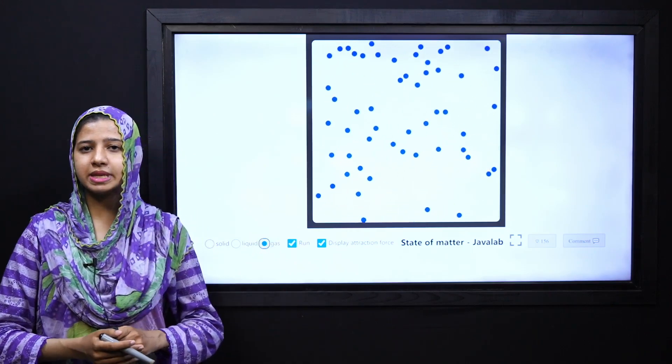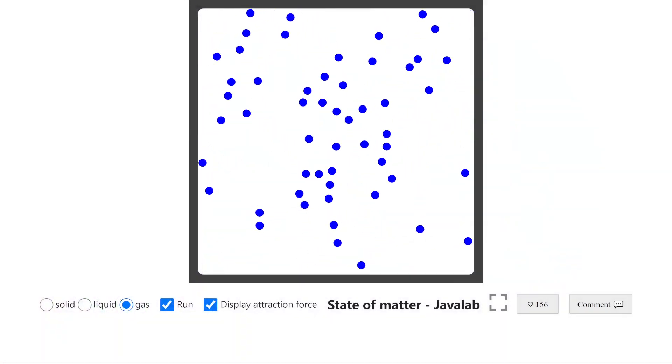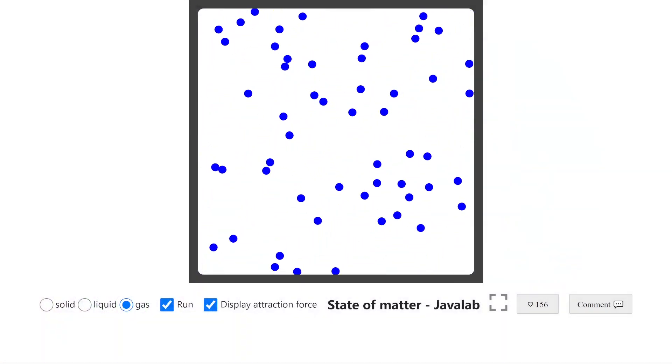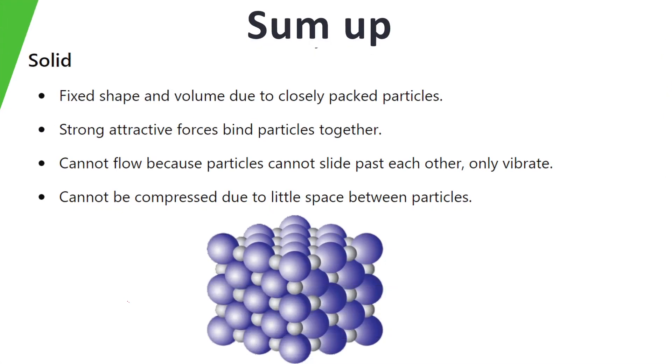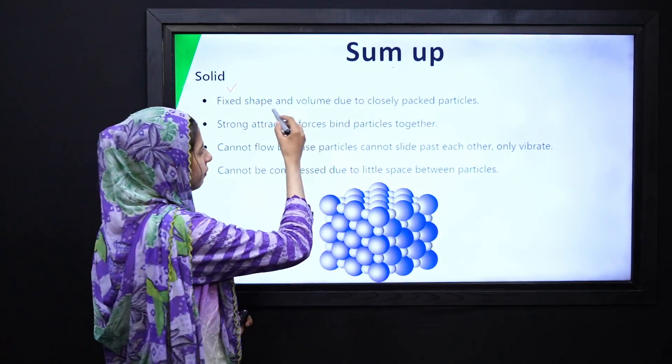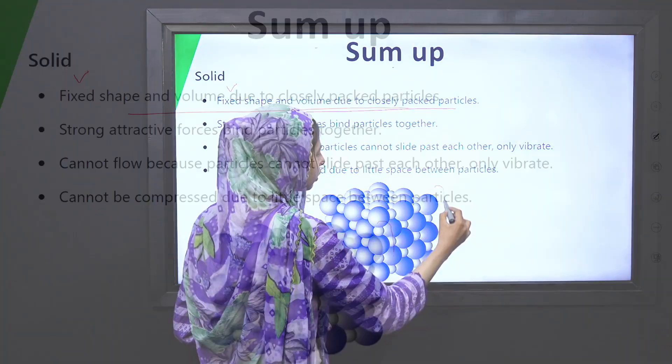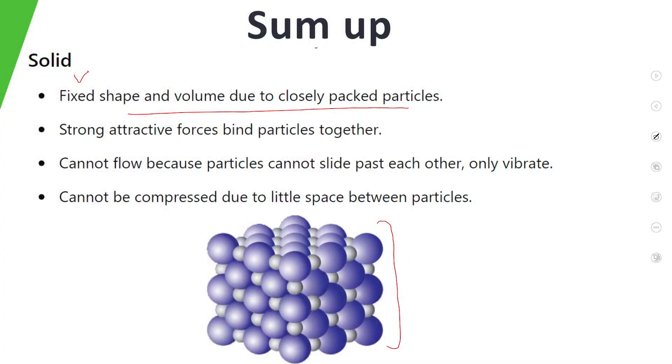Now let's go back to our slides and summarize our features. Dear students, we have learned from this simulation that if we talk about solid, volume and shape, it has fixed shape because molecules are closely packed. Attractive forces between particles are strong attractive forces.